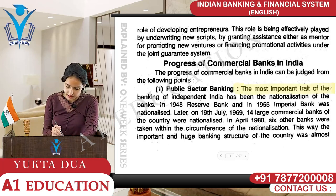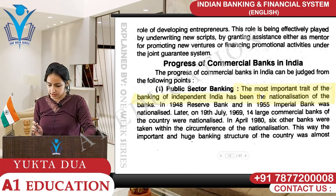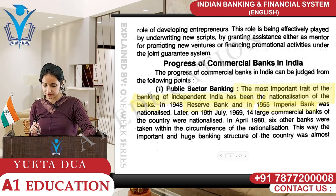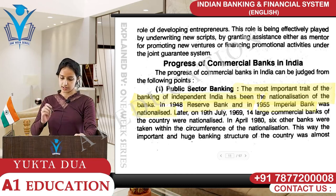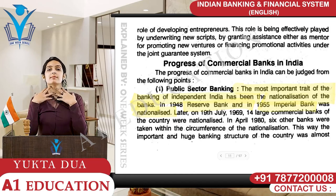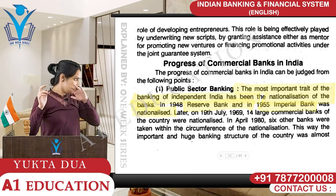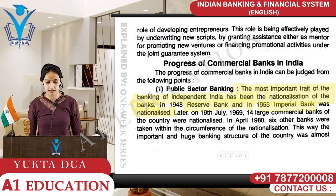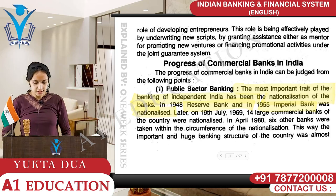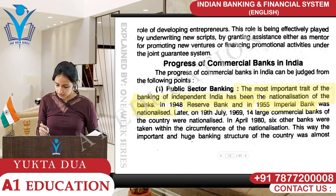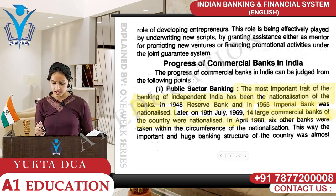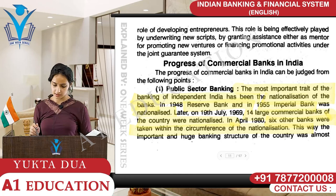The most important trait of independent India's banking has been the nationalization of banks. In 1948 the Reserve Bank was nationalized, and in 1955 the Imperial Bank was nationalized. Then on 19 July 1969, 14 large commercial banks of the country were nationalized - banks operating at the national level with branches everywhere. In April 1980, six other banks were brought under nationalization, building the important and huge banking structure of the country.